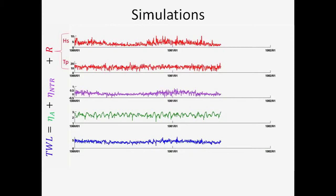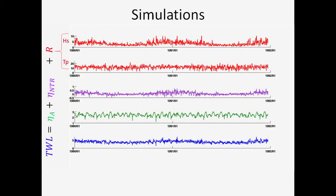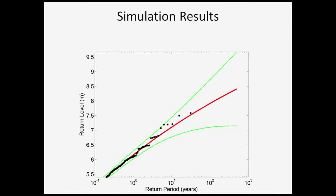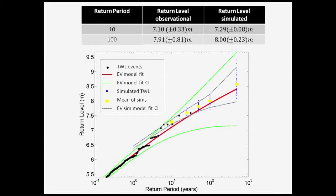This is just showing you two years, but we've made these 500 years long and simulated about 50 simulations for the time period. The return level plots show the event return level against the return period on the x-axis. The black dots are the observational data, the red is the model fit extrapolating the 100-year event, and the green are confidence intervals. Our simulated total water levels — indicated by the mean of these simulations, the yellow dot — are slightly elevated but have smaller confidence bounds, giving us more robust estimates by including combinations our record may not have seen.